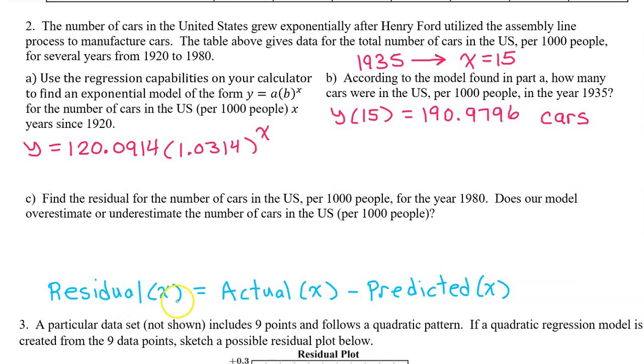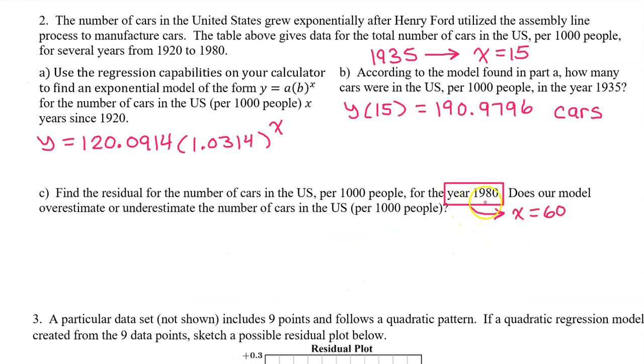The residual value at x will equal the actual value at x minus the predicted value at x. This means the value on the table minus the value of the regression model. 1980 is 60 years after 1920, so x = 60.